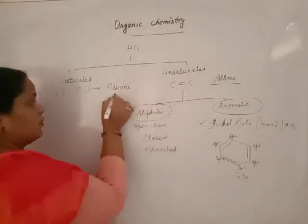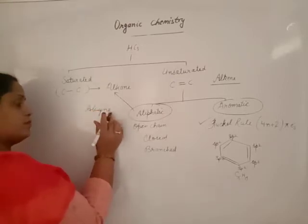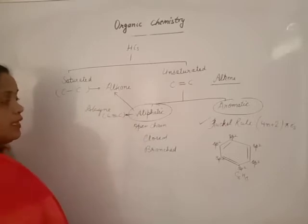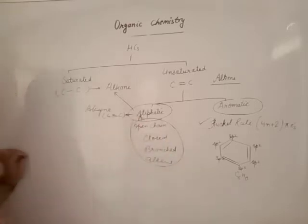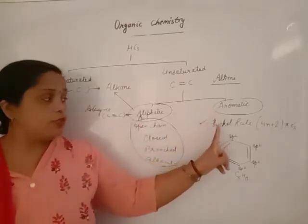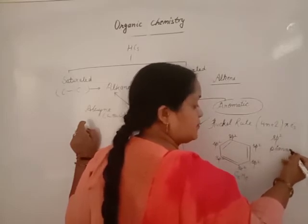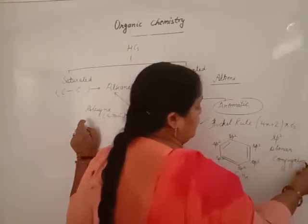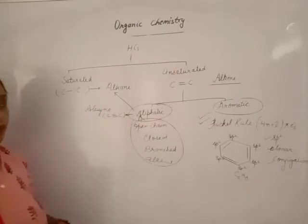Under the heading of aliphatic, all alkanes and alkynes are aliphatic. But any compound which follows Huckel's rule, where each carbon is sp2 hybridized, has planar geometry, and follows conjugation — all four conditions — those compounds are known as aromatic hydrocarbons.